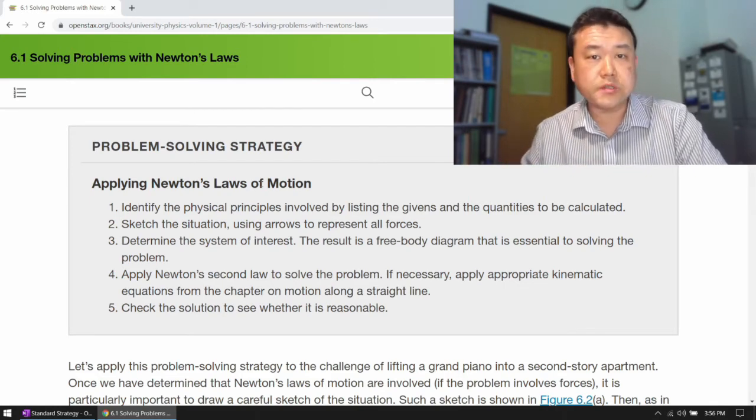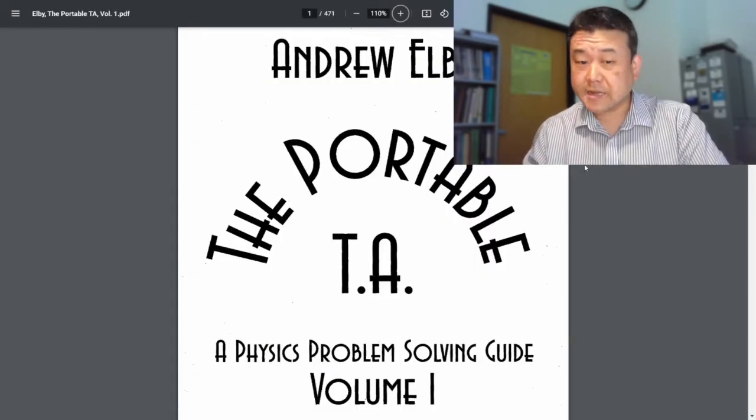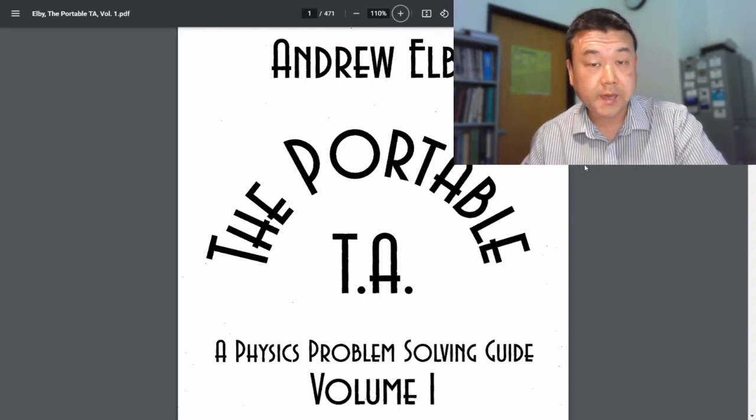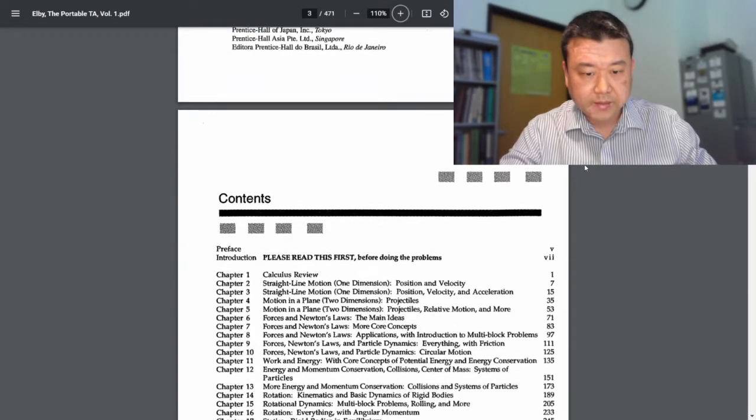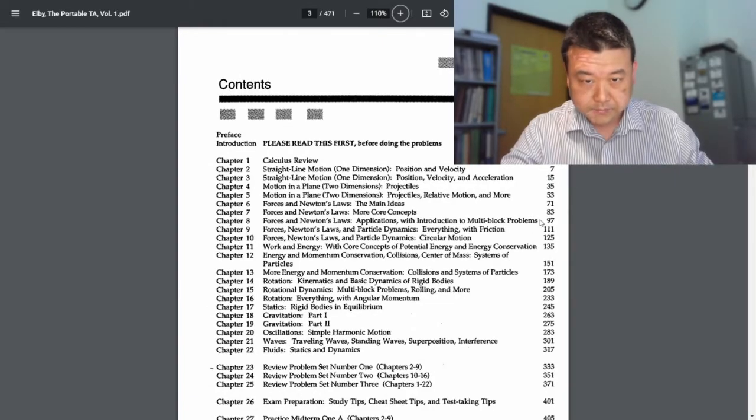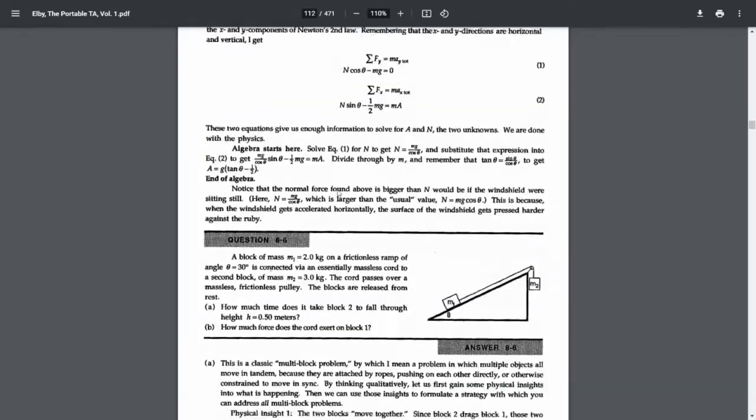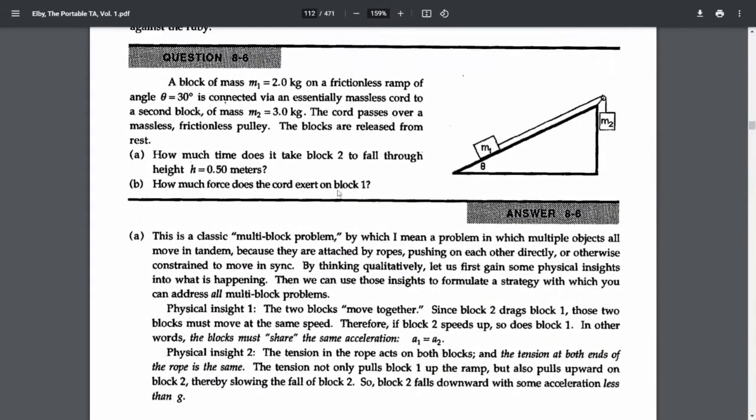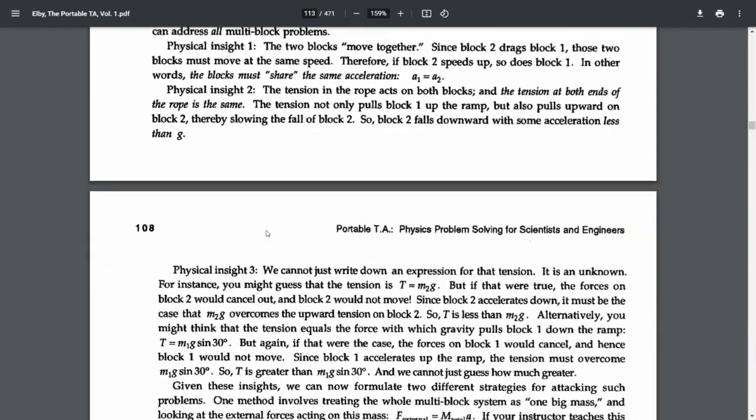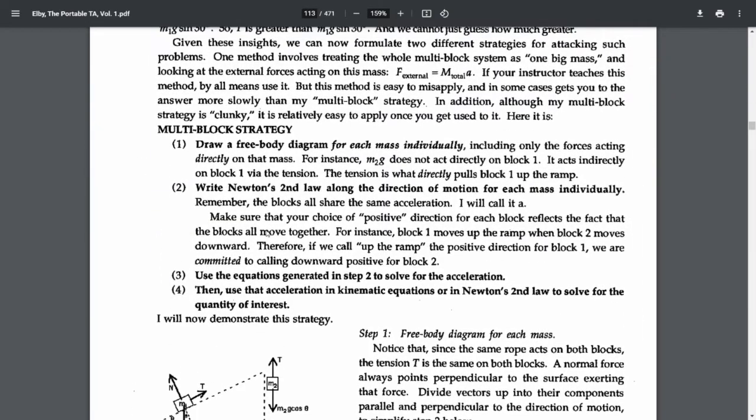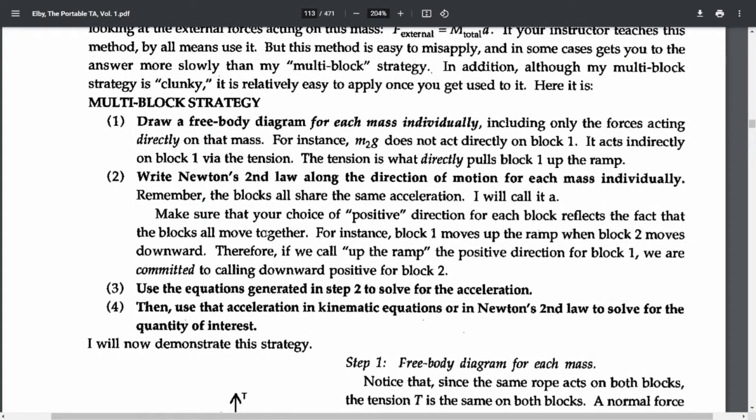And since in this class we are using the portable TA rather extensively, let me point out the parts of the portable TA that relate to situations that deal with forces. I believe it's introduced in question 8-6. So let me get to chapter 8. Here's chapter 8, 8-6. In this problem, Andrew LB introduces something that he calls multi-block strategy. And again, in a separate video, I'll draw a more thorough comparison of our standard strategy and the Newton's law strategy that is introduced in the portable TA.